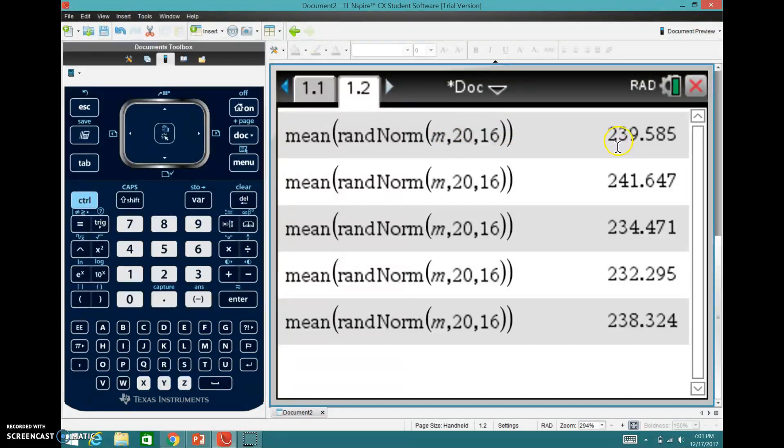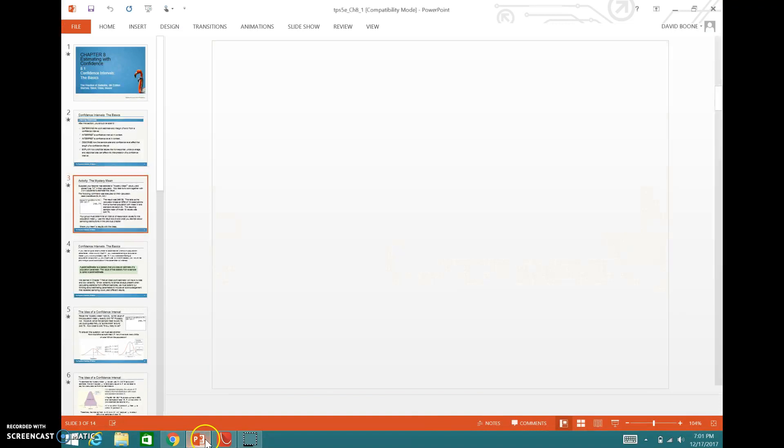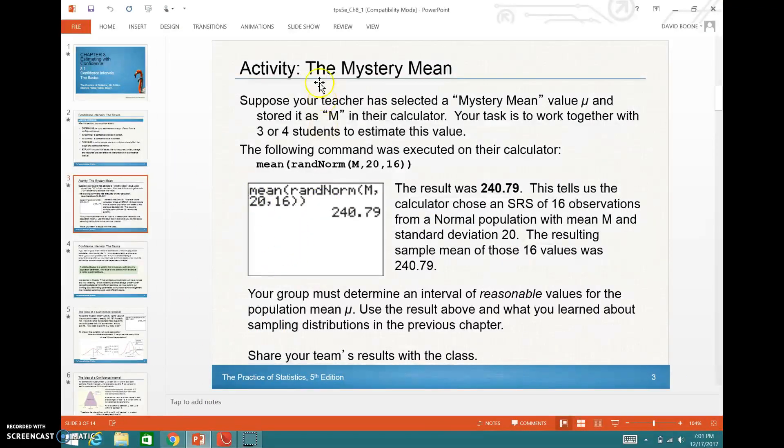So you can see what I've done is I've found the mean of 16. There's 16 samples taken from a random normal distribution with some mean and a standard deviation given. And these are all the different results from that. And what we're going to try to do is we're going to try to estimate what the mean of all of these are.